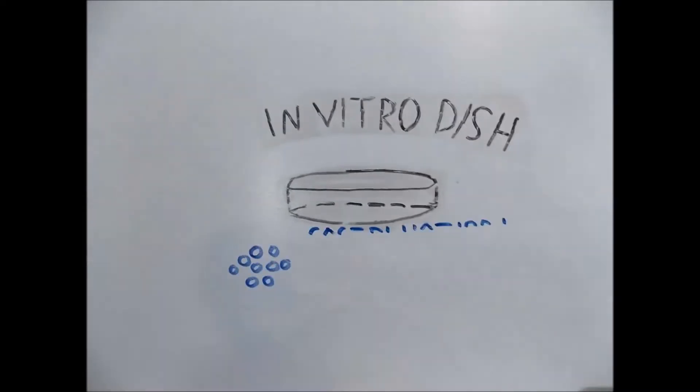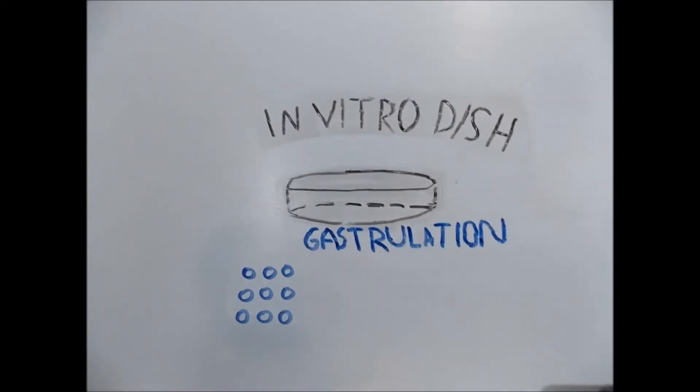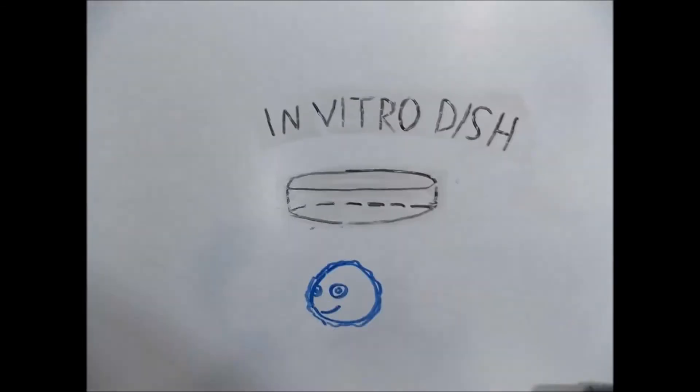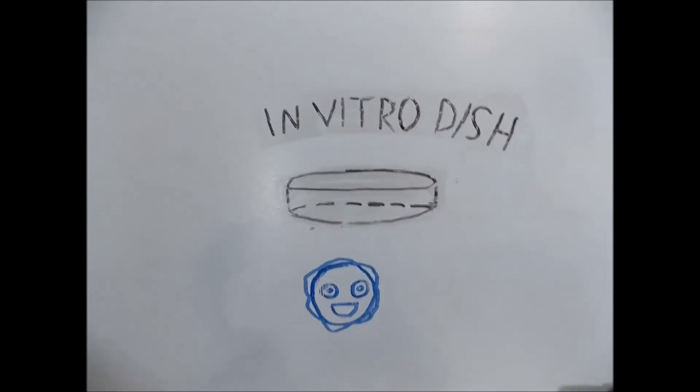Following the blastocyst stage, the inner cell mass goes through a process called gastrulation, proliferating and organizing itself into three cell layers called germ layers: the mesoderm, endoderm, and ectoderm. The germ layers are in charge of generating every cell in the human body and is where the HESC is born.